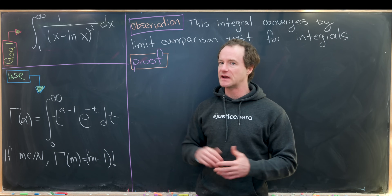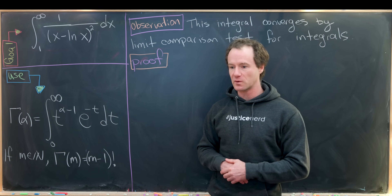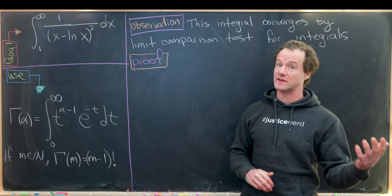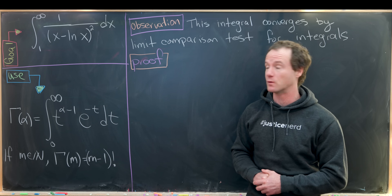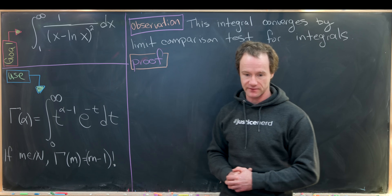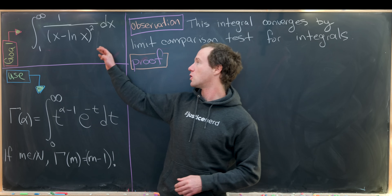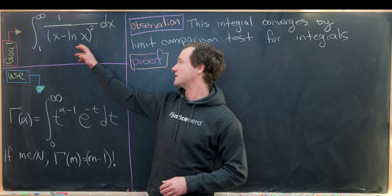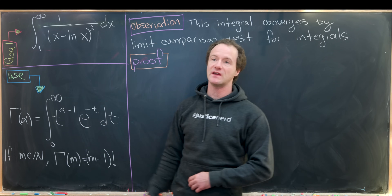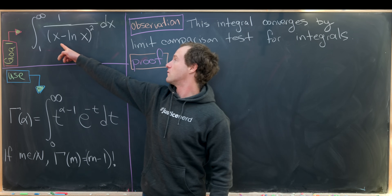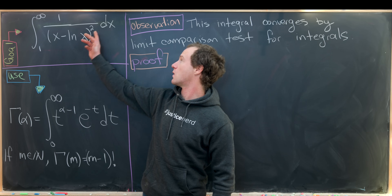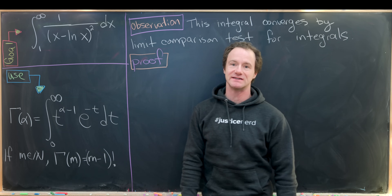We can't get a nice closed form for this value because I don't think one exists for the infinite sum that we'll get to. Our goal is to calculate the integral from 1 to infinity of 1 over (x minus ln x) squared dx.